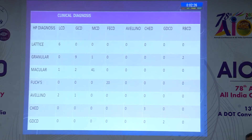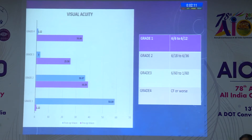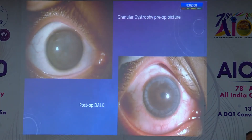The variations in the clinical appearance of the corneal opacities and pre-existing corneal scarring make the diagnosis difficult. Our study had a median BCVA of 6/9, and more than 95.5% of eyes had a best corrected visual acuity of 6/36 or better.